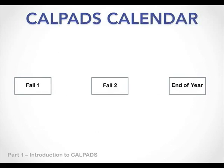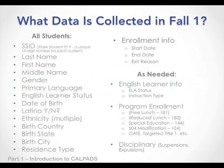There are basically three reporting periods in a typical year, and they're called Fall 1, Fall 2, and End of Year. We're going to focus in this presentation only on Fall 1 data requirements and processes. Future presentations will talk about the others.